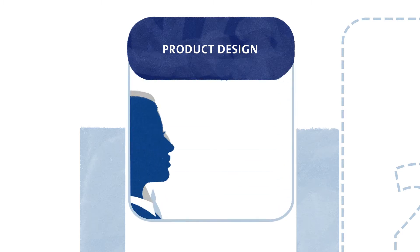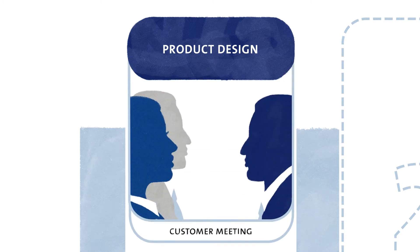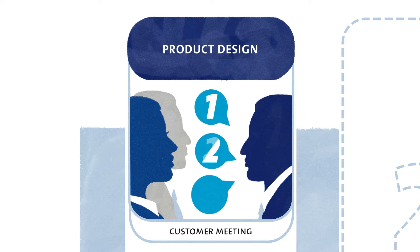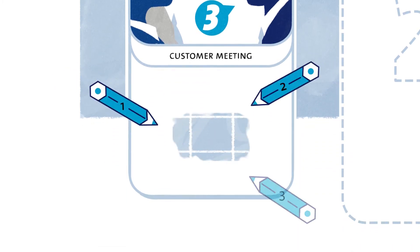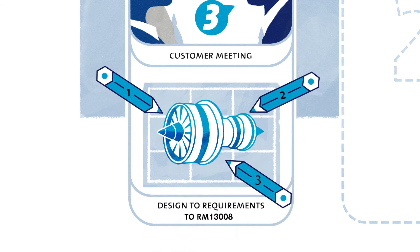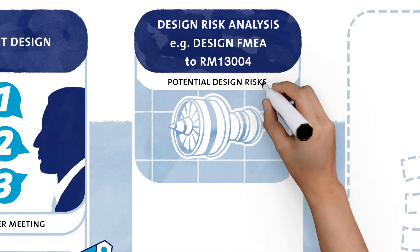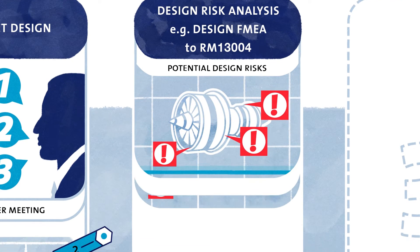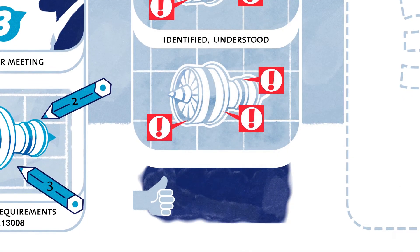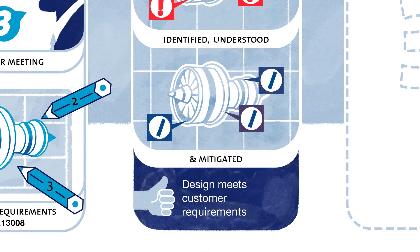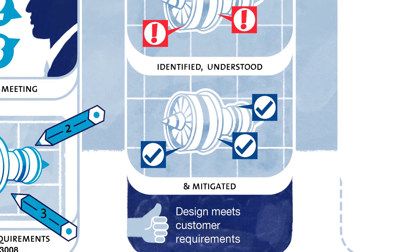Firstly, we have product quality planning. This is where the design team works directly with the customer to understand what the product needs to do. From this, a product design can be created. Cross-functional teams then carry out design risk analysis to ensure that potential design risks are identified, understood and mitigated — for example, by using a design failure mode and effects analysis tool.